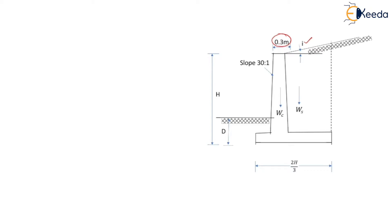The width of the stem at the bottom and the thickness of the base slab are kept equal to H/10, meaning 0.1 times the height. Also, the horizontal distance between the stem and the toe should be at least H/10. The slope of the surface of the stem towards the toe side should be at least 30:1. The earth pressure acting on the retaining wall is computed using Rankine's theory.